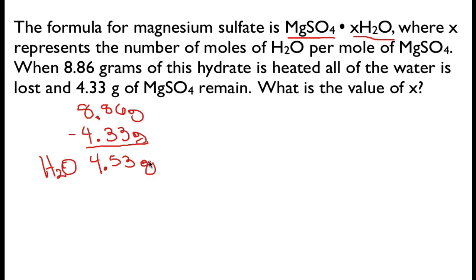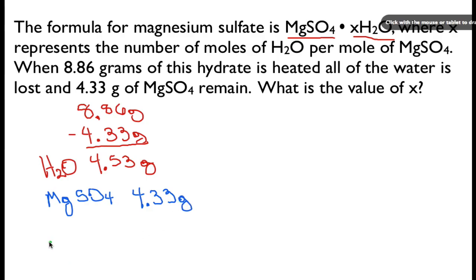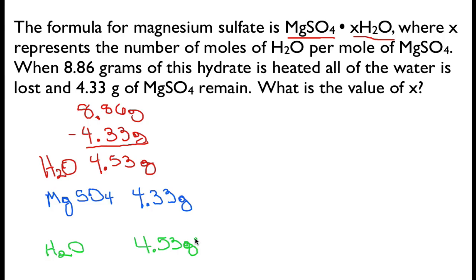Now we can figure out the moles and do our molar comparisons to find the ratio. We write down the compounds and the mass of each. For magnesium sulfate, MgSO4 — the dehydrated part — we have 4.33 grams, and for water we have 4.53 grams. We have to convert those into moles so we can compare the molar values and get the ratio of moles of magnesium sulfate to moles of water.